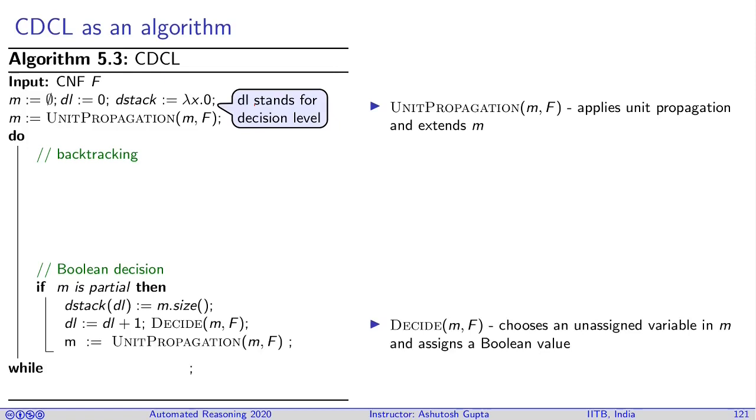Let's first analyze boolean decisions. Suppose your current model is partial. What do you do? You keep the record of the size of your model in the decision level DL, then increment the decision level and decide a random variable which has not been assigned yet in the formula F.